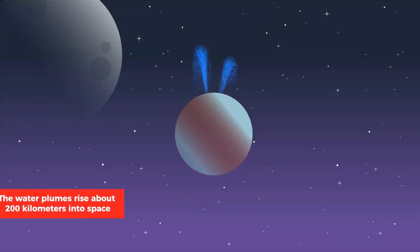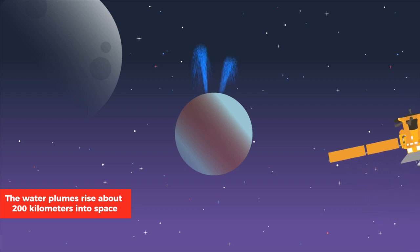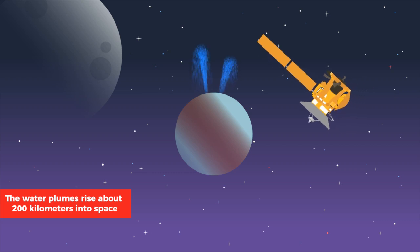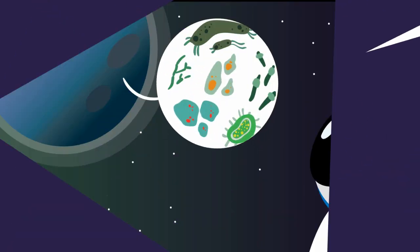It's been predicted the water plumes rise about 200 kilometers into space before raining down. Timed right, a vehicle could simply fly through the water plume and collect what's on the windshield.